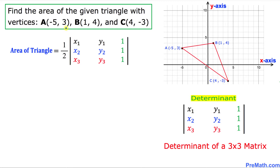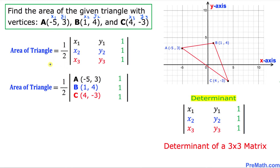Here is our very first step. Let's look at these points A, B, C. I want to call this point A its coordinates x1, y1; for B is going to be x2, y2; for C is going to be x3, y3. Then this formula of this triangle is going to become with these points A, B, and C.